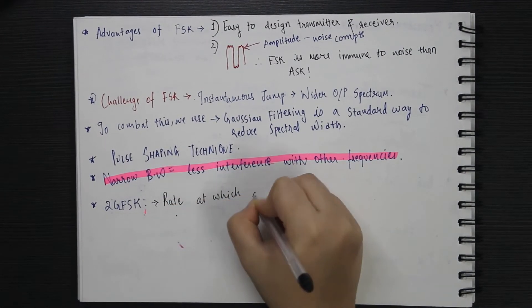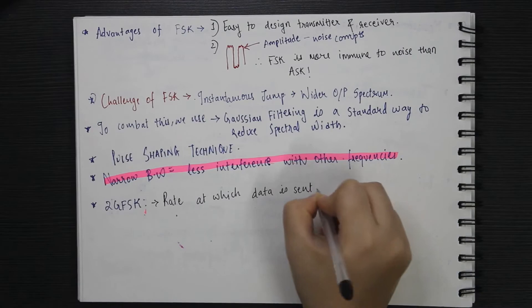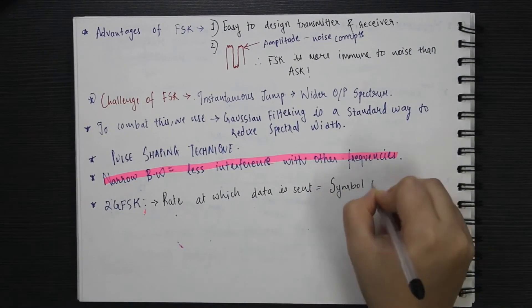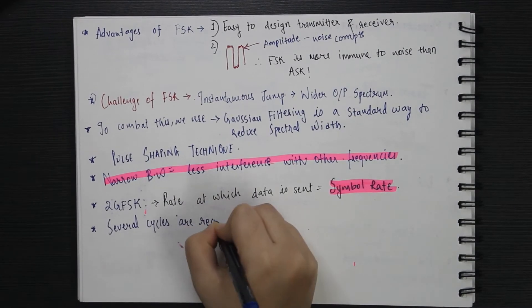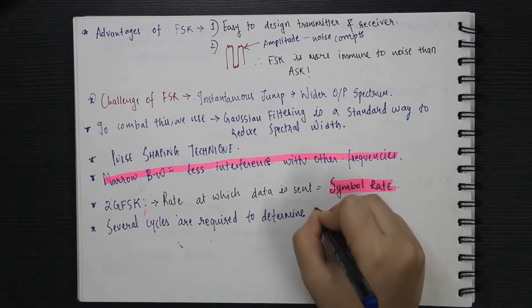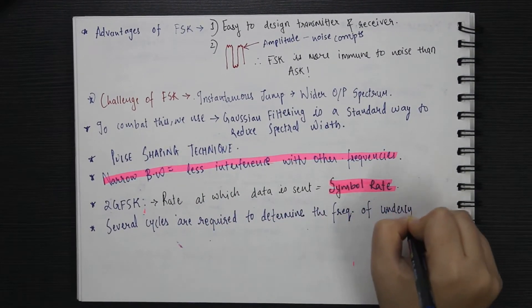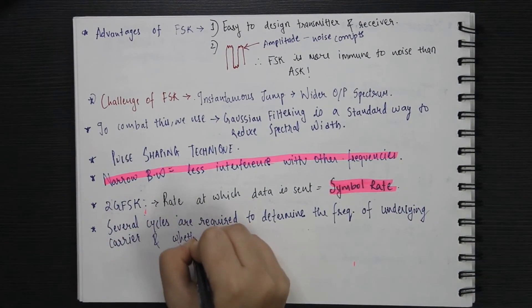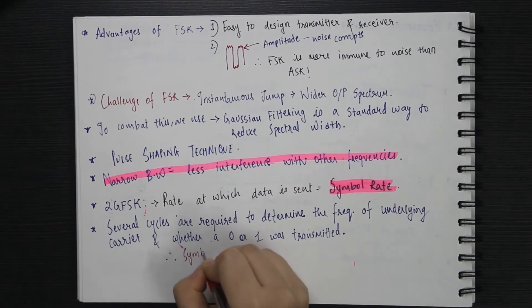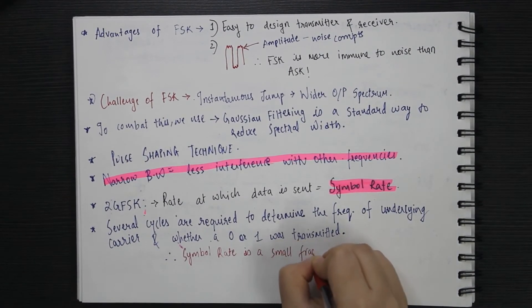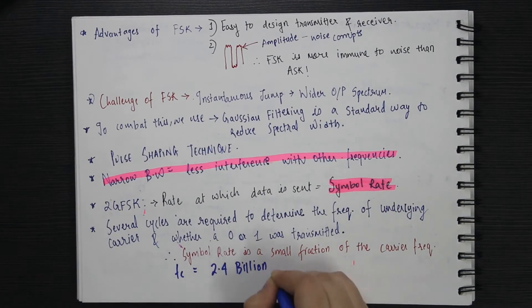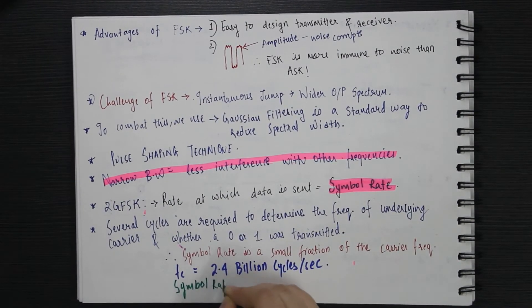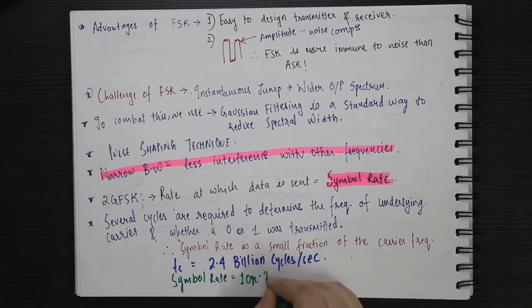The rate at which the data is sent through the system is called the symbol rate. It takes several cycles to determine the frequency of the underlying carrier and whether a 0 or 1 was transmitted. Thus, the symbol rate is a very small fraction of the carrier frequency. Even if the carrier frequency is roughly 2.4 billion cycles per second, the symbol rate is only 1 or 2 million symbols per second.